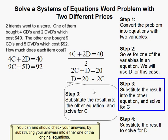Then what you can do is take that and substitute it. So, everywhere where you see D in the other equation, you can put 20 minus 2C. The original equation is here, 9C plus 5D equals 92. Now, it's 9C plus 5 times this expression, equals 92.